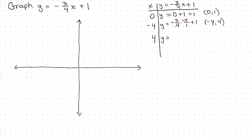What about if I put in positive 4 for X? The 4s cancel, but I still have a negative sign. So -3 plus 1, which is -2. That means the ordered pair is (4, -2).